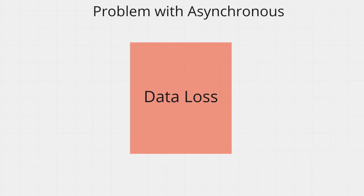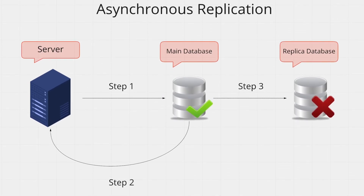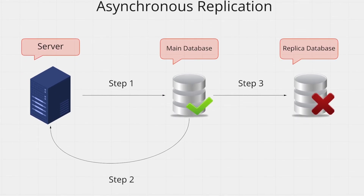So what's the main problem with asynchronous replication? That would be data loss. Let's say your replica database is down when the write happens — your main database will have the data, but the replica won't. Imagine having more than one replica: different replicas will have different amounts of data missing. There are things you can do to reach a compromise between write performance and minimizing data loss, but that's outside the scope of this video — we can talk about that in a different one.